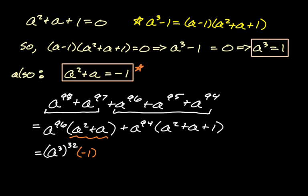And then a to the 94th, I have absolutely no idea what it is, but that's okay. Because a to the 94th is being multiplied by a squared plus a plus one, which is the given information up here, which is zero. So we don't need to know what a to the 94th is because it's just times zero.